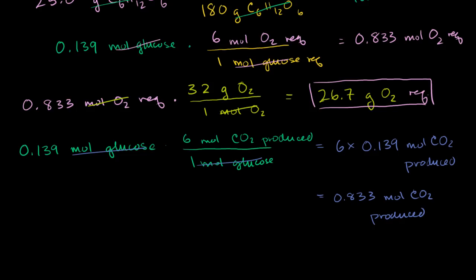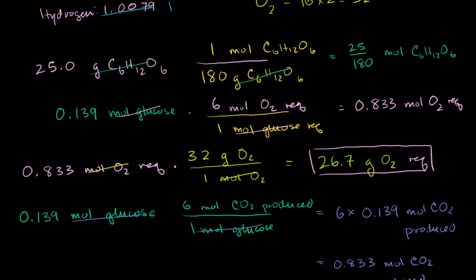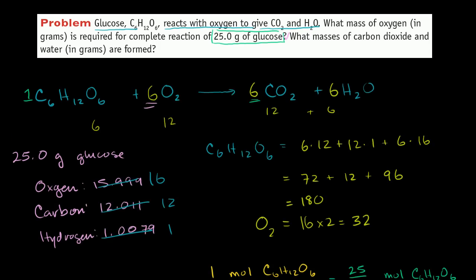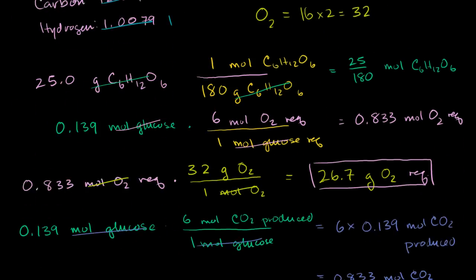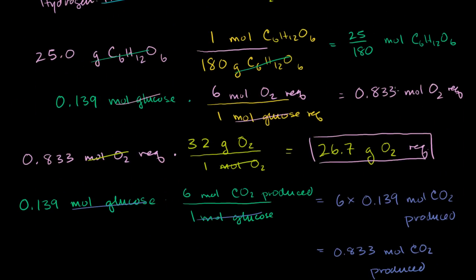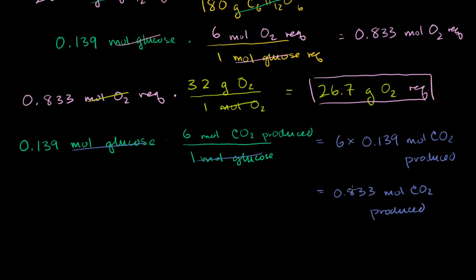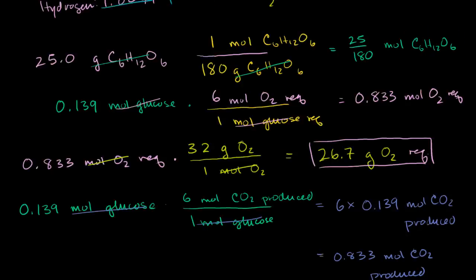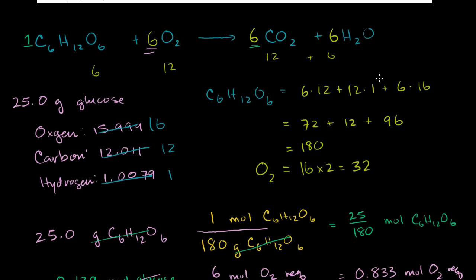We can see that for every one mole of glucose you get six moles of O2, six moles of CO2, and six moles of H2O — a 1:6:6:6 ratio. That's why we had 0.833 moles of oxygen and we're also getting 0.833 moles of carbon dioxide.